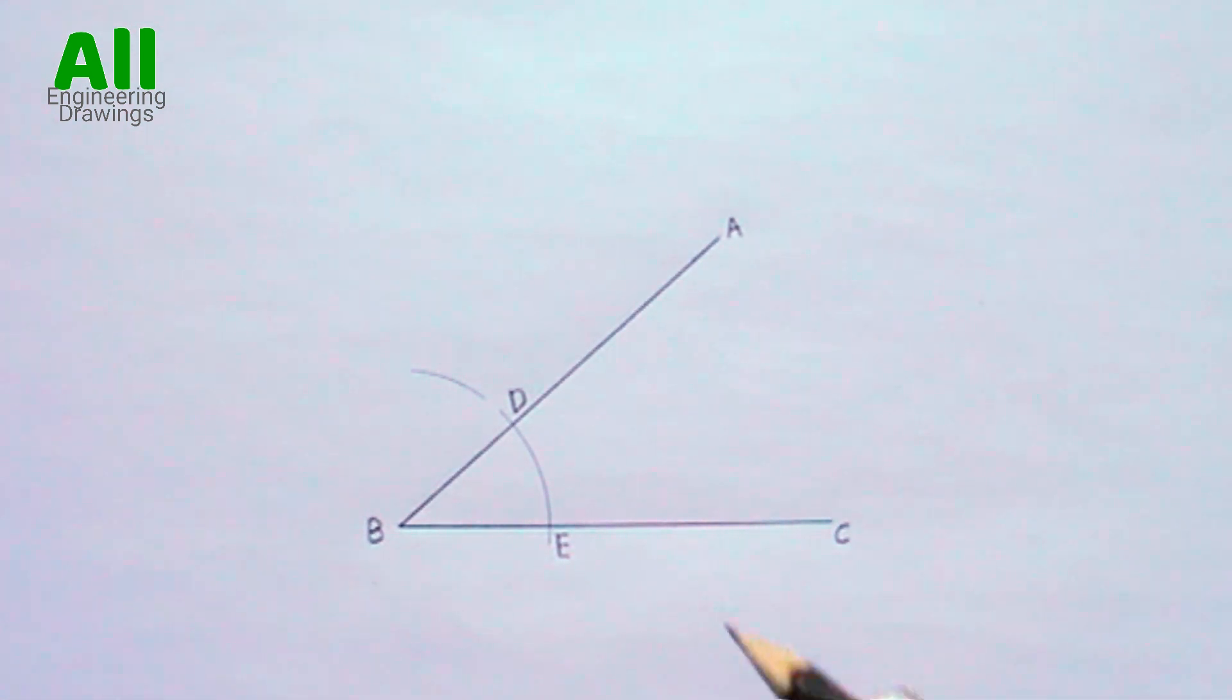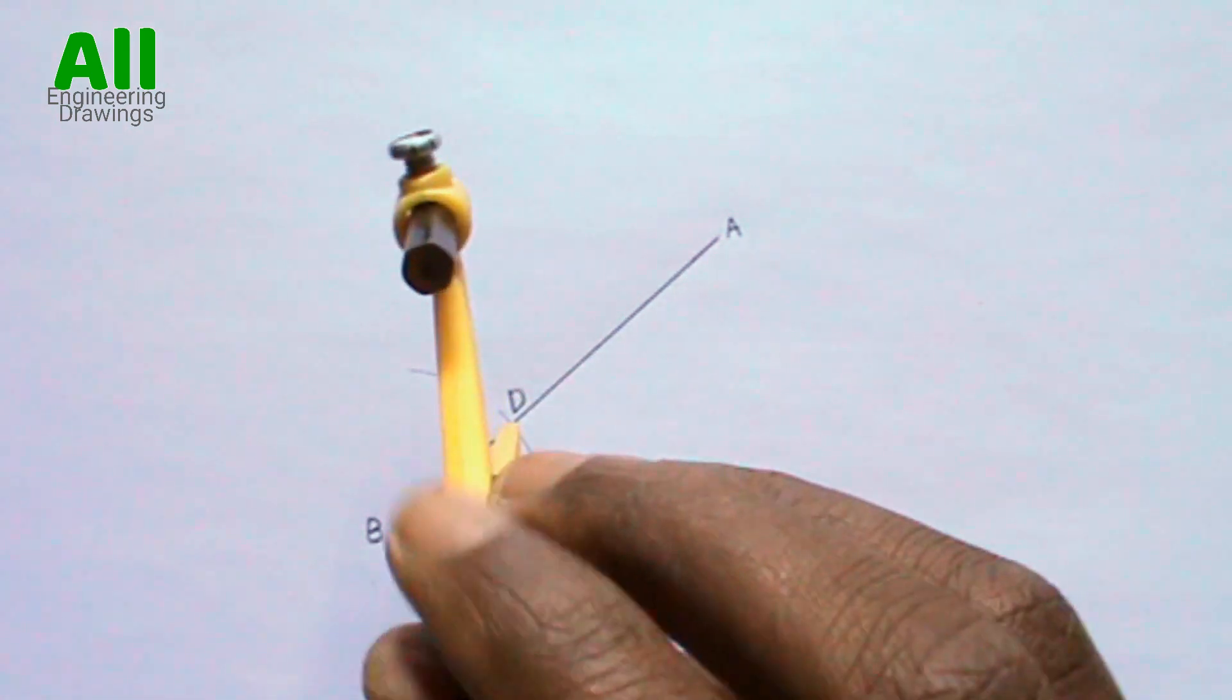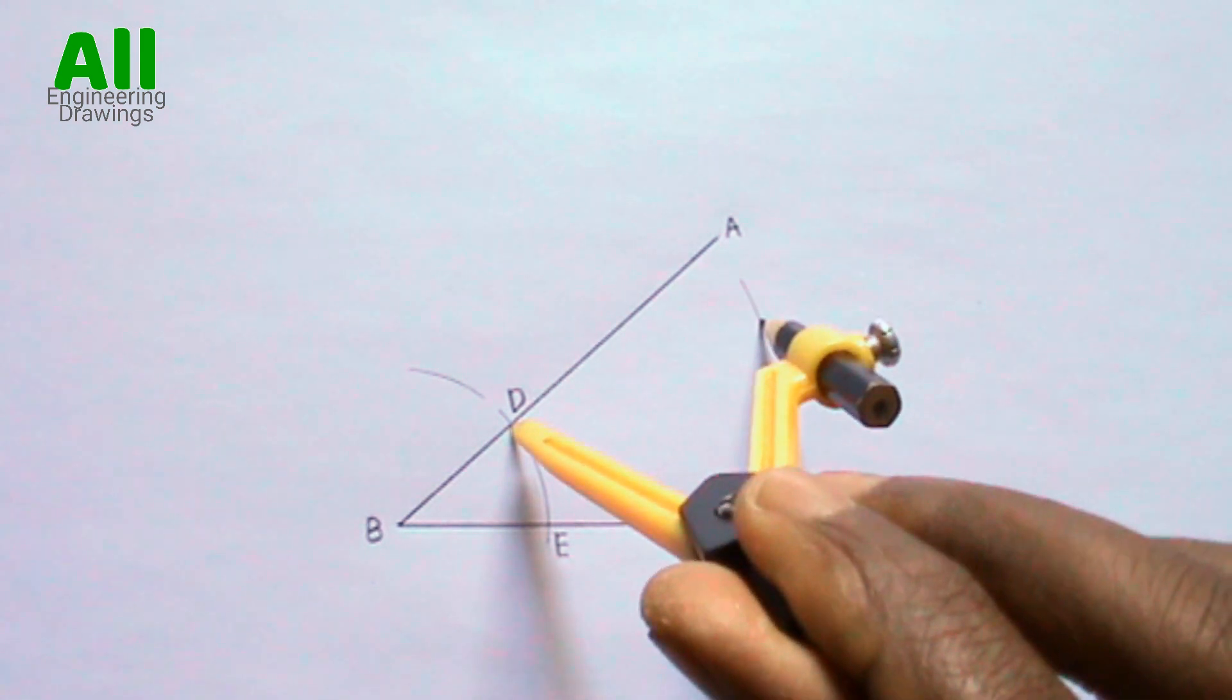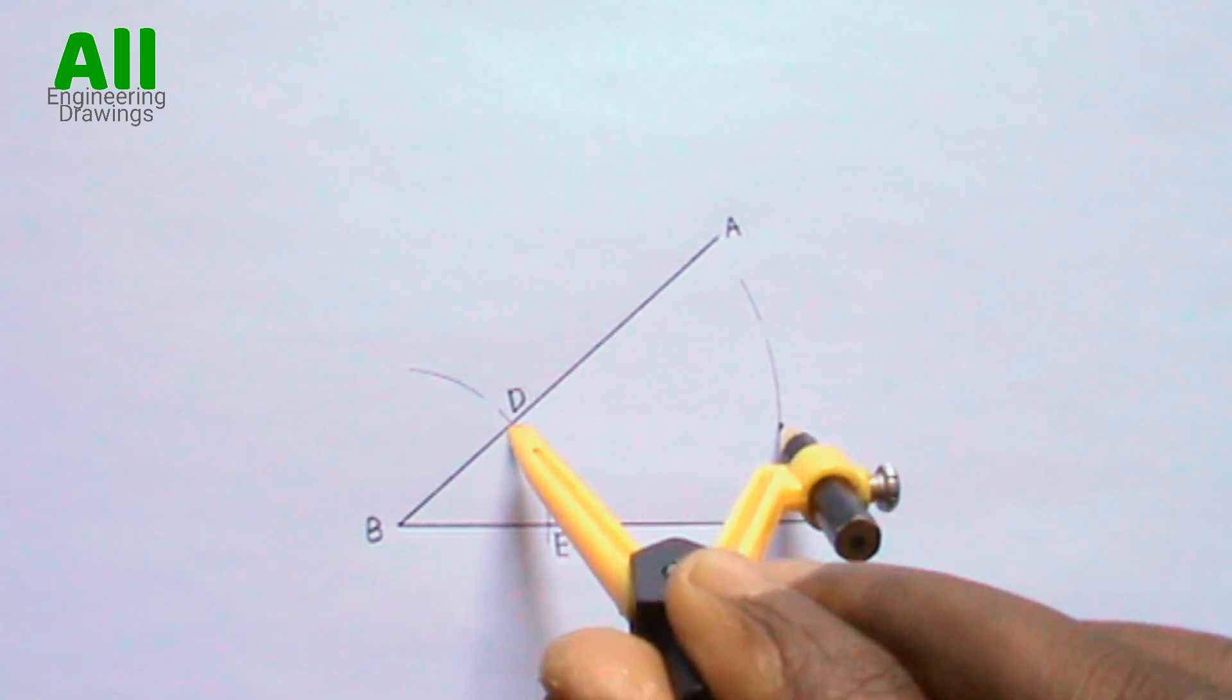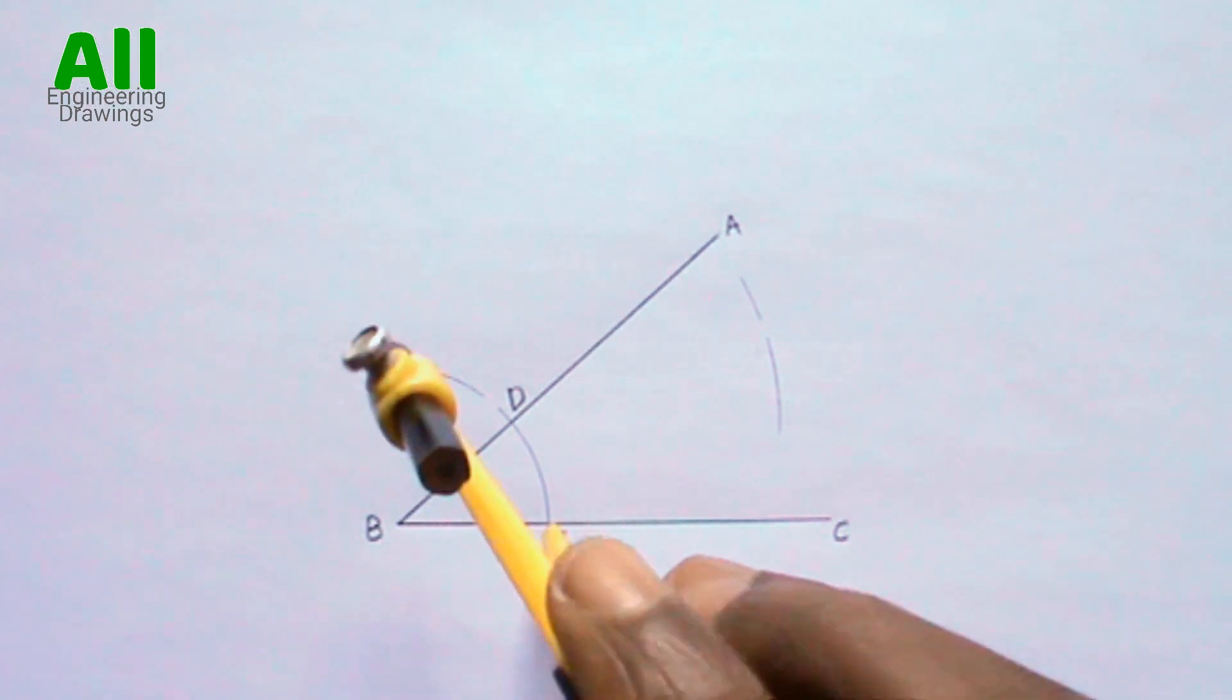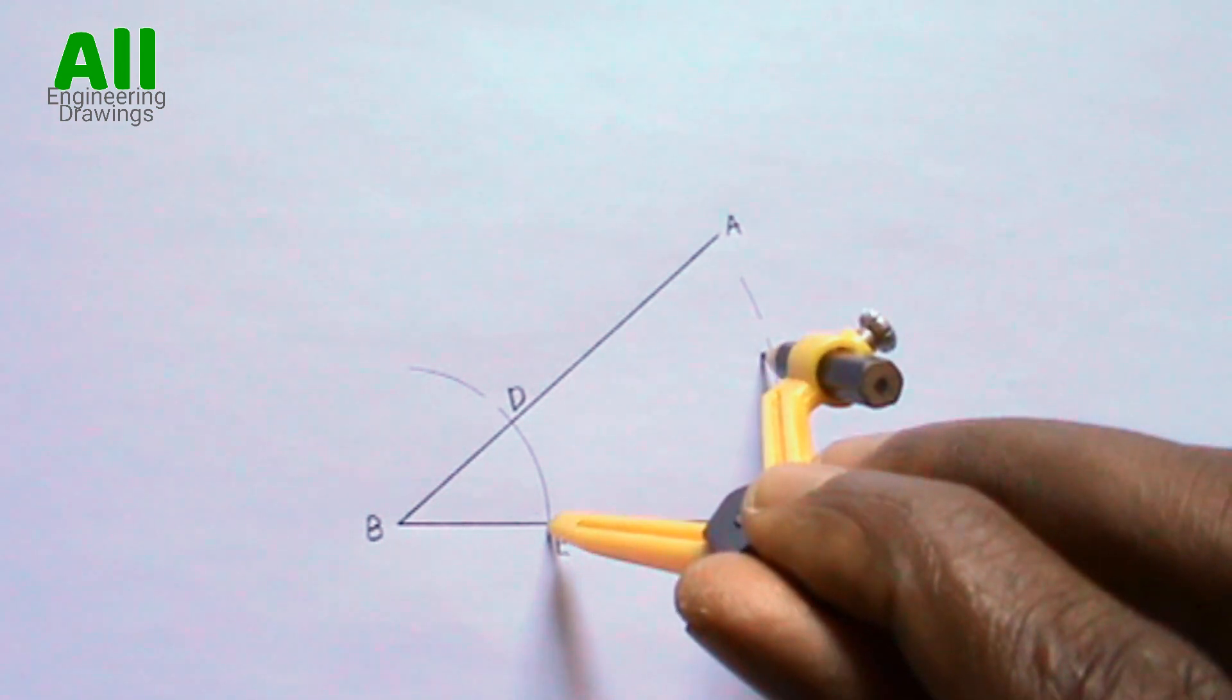Now place your compass on point D. Then cut an arc this way. Then cut another arc to intersect the previous arc.